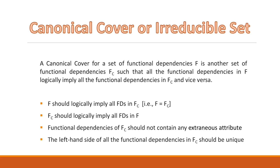A canonical cover for a set of functional dependencies F is another set of functional dependencies FC such that all the functional dependencies in F logically imply all the functional dependencies in FC and vice versa. So for canonical cover you must remember the following points: F should logically imply all FDs in FC, that is F must be equivalent to FC. Also, FC should not contain any extraneous attribute.